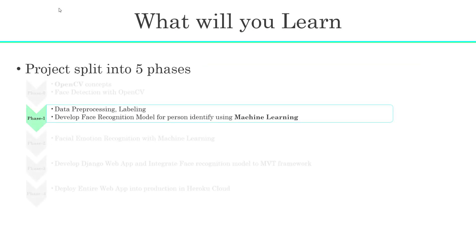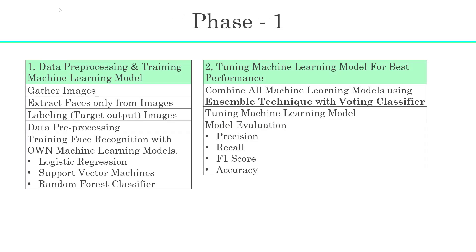Next, in Phase 1, we will actually start the project by doing data preprocessing on images and train a machine learning model to identify the person's name. Topics covered include extracting faces from images, labeling, data preprocessing, and training the machine learning model. We will also tune the model and evaluate its performance using Precision, Recall, and F1 Score.